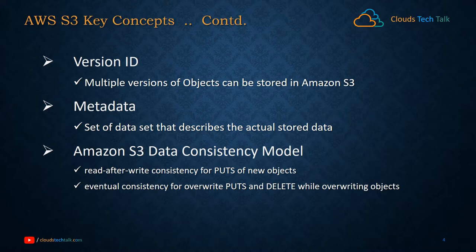Metadata is a set of data that describes the actual stored data. As mentioned, an S3 object consists of metadata, which is basically a meaningful summary of your actual content or object. For example, created-by, updated-by, and timestamp are data that AWS S3 automatically generates and stores about that particular content.